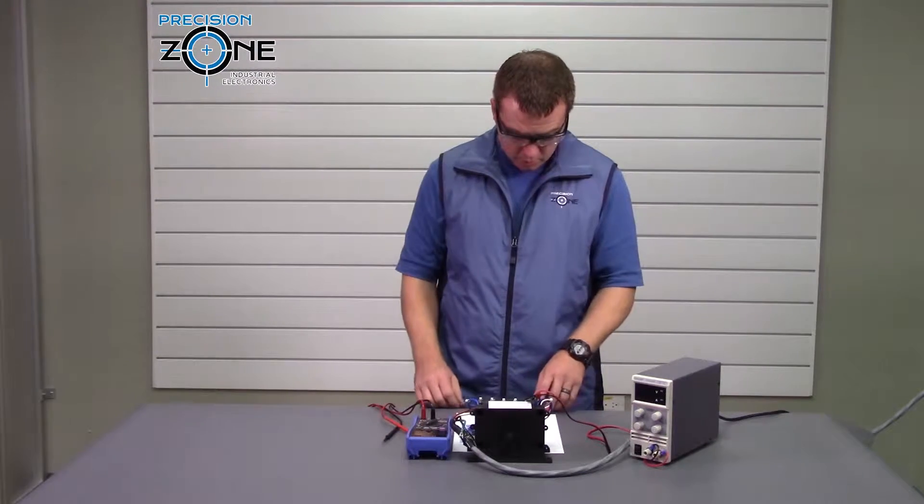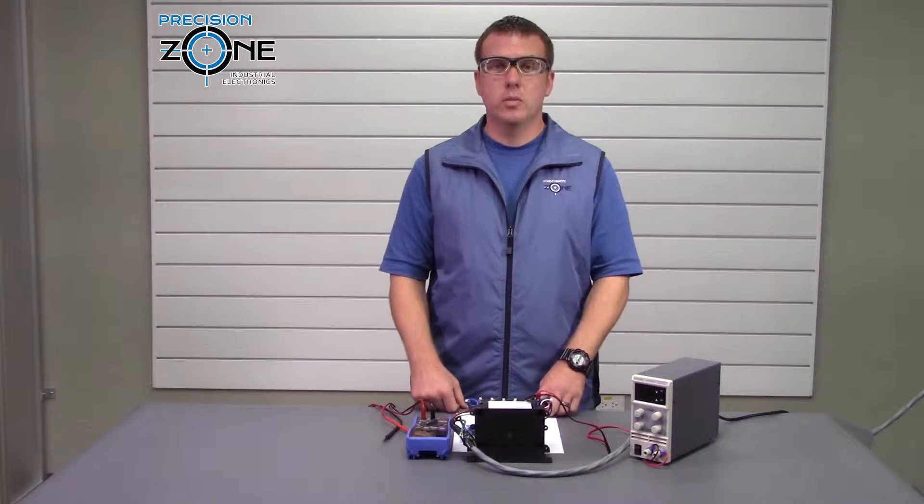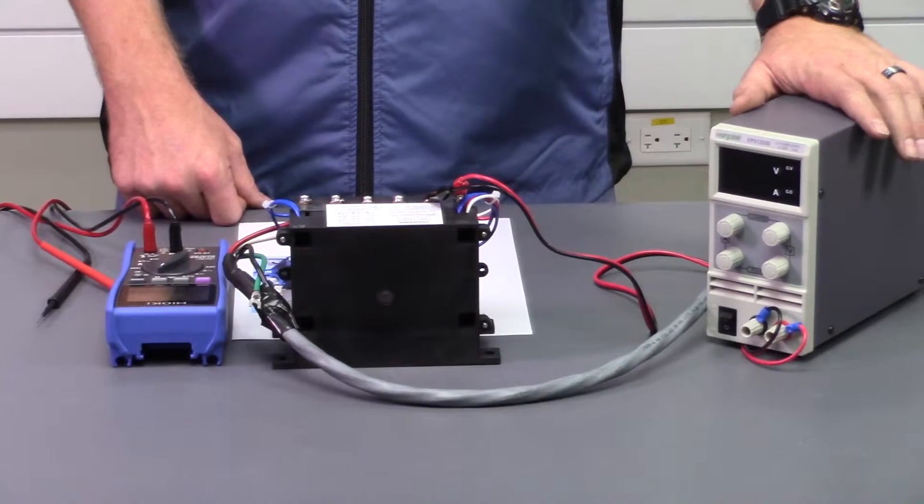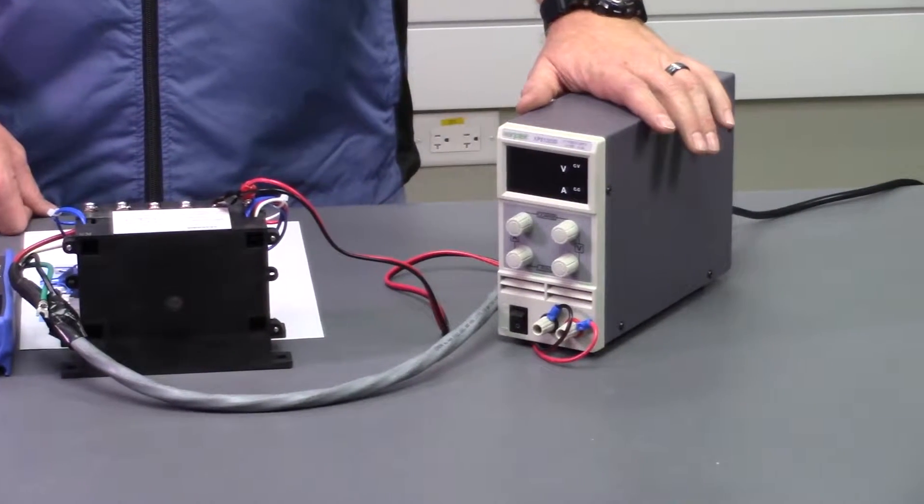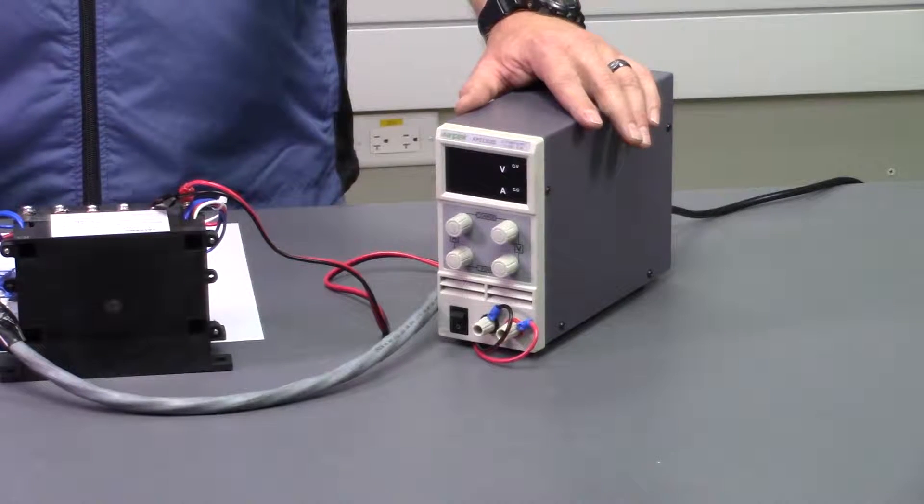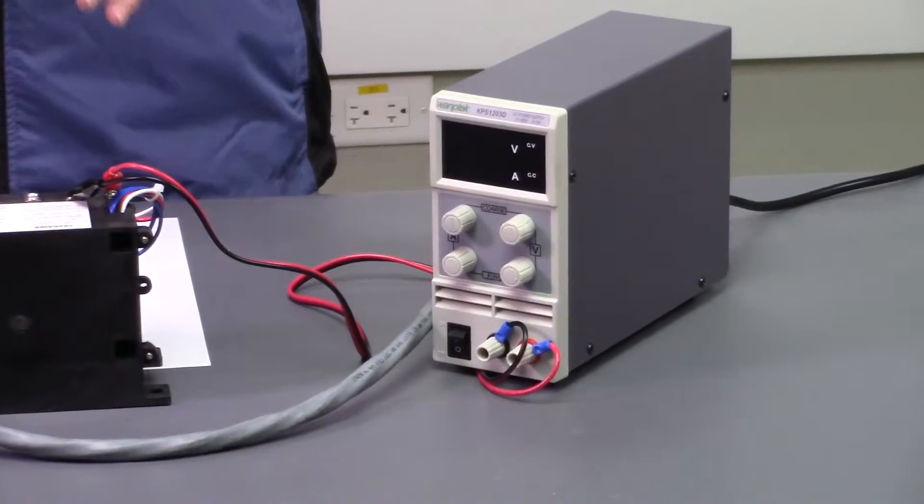So now the next step is to apply 24 volts DC, and I'm going to be using our benchtop power supply to apply that 24 volts DC. And when you do apply that 24 volts DC, what's going to happen is the contactor is going to engage. It's going to make a popping sound, so don't let that scare you.